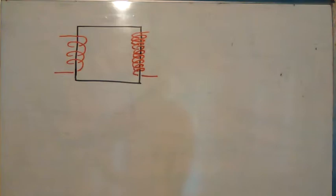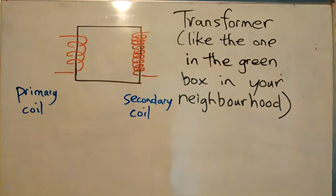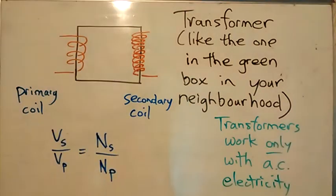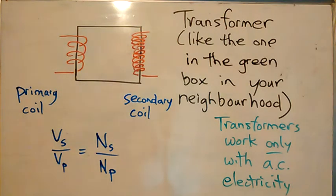What I've drawn here is a really basic transformer, and it'll illustrate the story we're about to tell. Here's a little more detail of what this transformer looks like - it could be a transformer like the one in the green box in your neighborhood, or a much bigger version in the substation near the old Coopers or around 216th and Dewdney Trunk. Transformers work only with alternating current electricity like the kind from BC Hydro - they don't work at all with direct current electricity, like the type coming from the battery in your cell phone or computer.